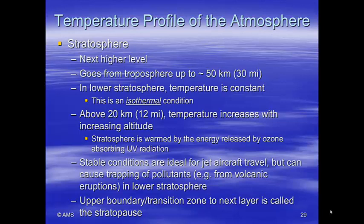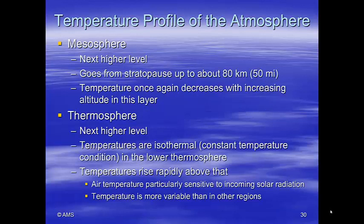After that we get the stratosphere, which goes from the tropopause up to about 50 kilometers or about 30 miles. After temperature being constant for a bit, it then begins to rise — above 20 kilometers, temperature increases with altitude. This warming is caused by energy released by ozone absorbing ultraviolet radiation from the Sun. The stable conditions up there are ideal for jet aircraft travel, however pollutants can get caught up there for a while. The upper boundary of the stratosphere is the stratopause, where temperature is again constant for a portion.